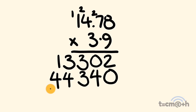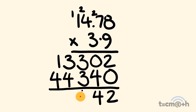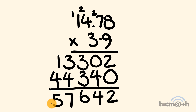Now we're going to go through and do our addition. 2 plus 0 is equal to 2. 4 plus 0 is equal to 4. 3 plus 3 is equal to 6. 3 plus 4 is equal to 7. And 1 plus 4 is equal to 5.